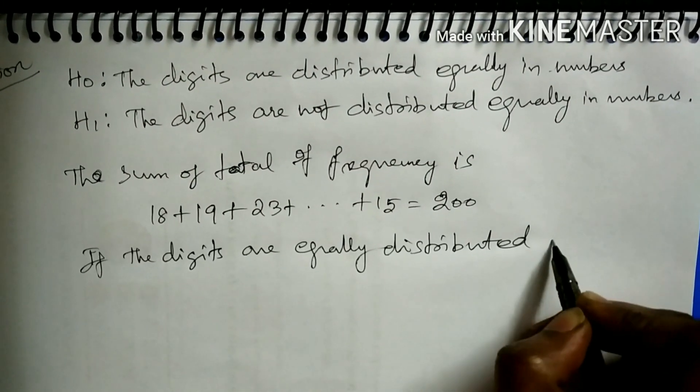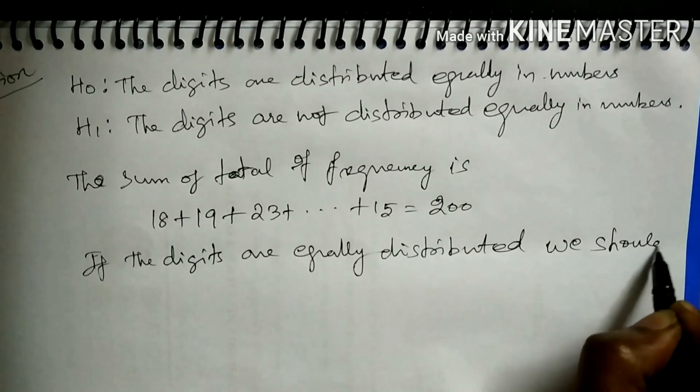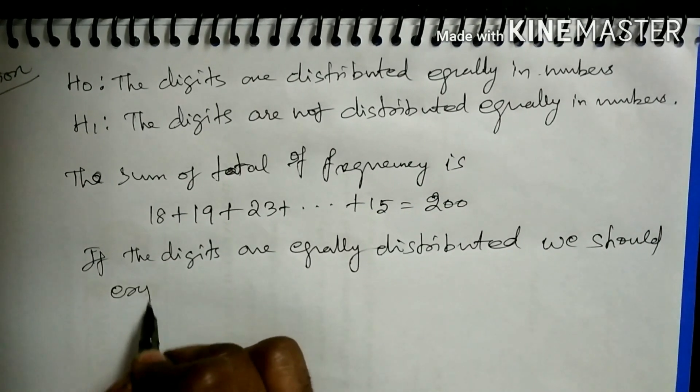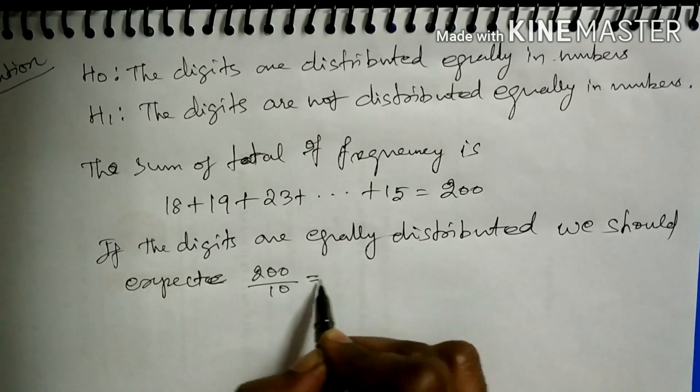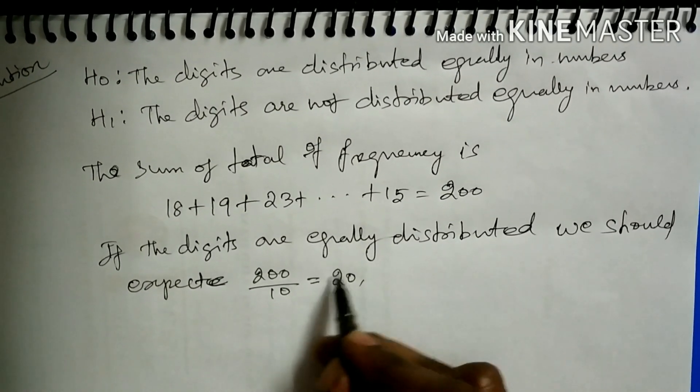If the digits are equally distributed, then we should expect 200 divided by 10 because there are 10 digits. Then we are getting 20.